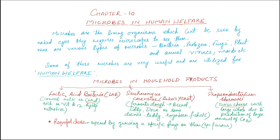First, microbes in household activities. Lactic acid bacteria (LAB) can convert milk into curd, which is rich in vitamin B12 (cyanocobalamin) and is highly nutritious for our digestive system. Another microorganism helpful in household activities is baker's yeast, Saccharomyces cerevisiae.